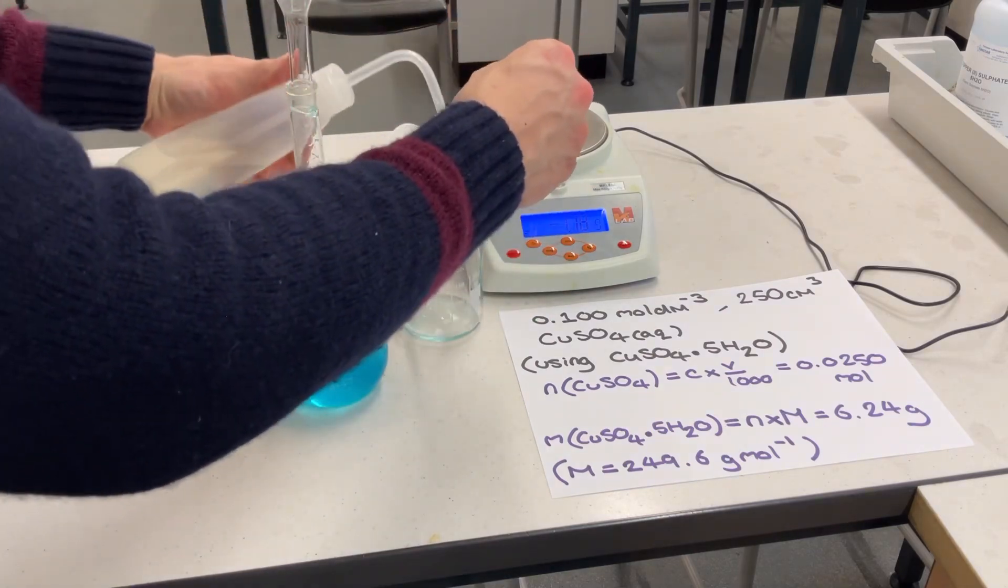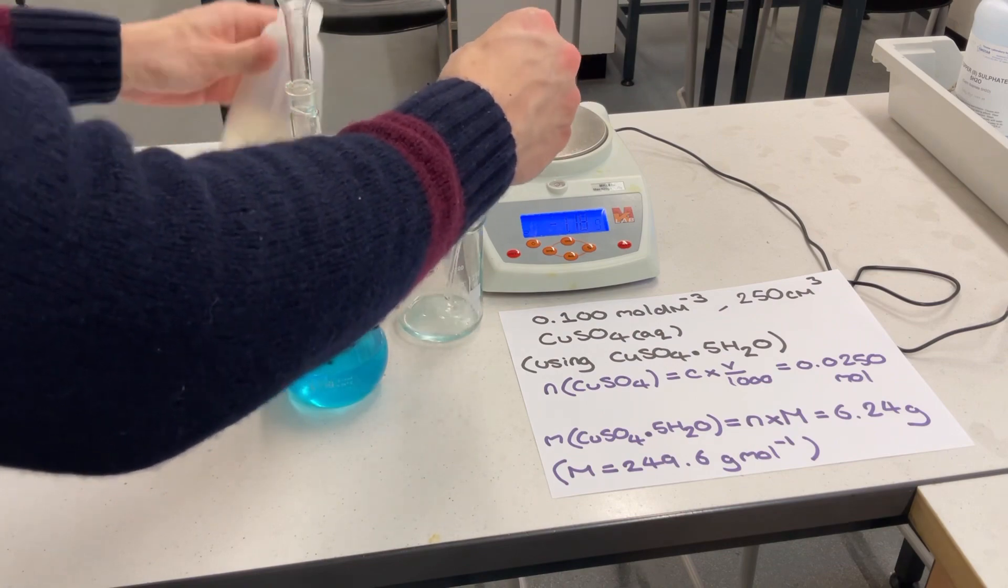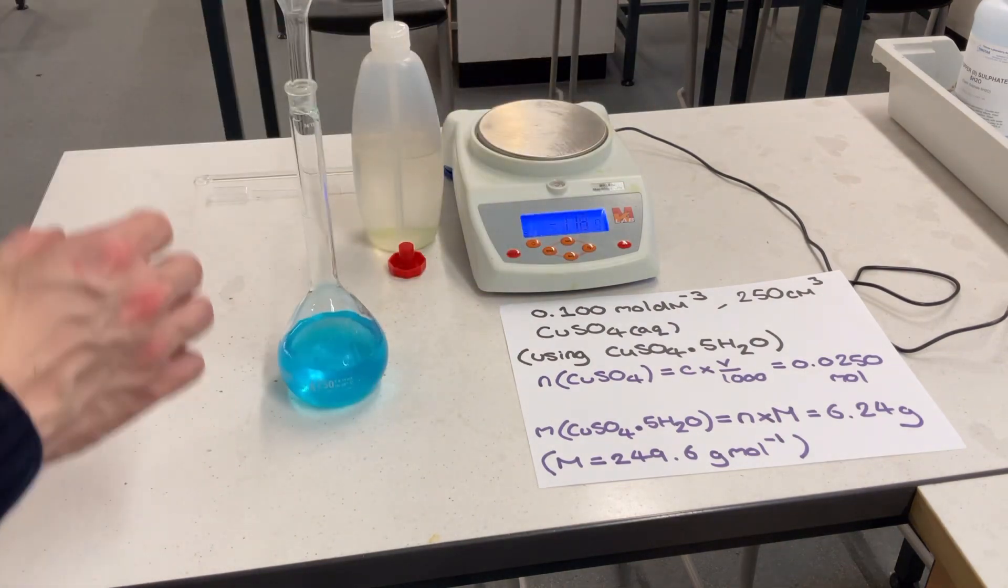Step 4: Before adding any more deionized or distilled water to the volumetric flask, I need to make sure I transfer any washings from the beaker into the volumetric flask solution.